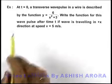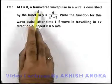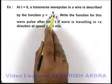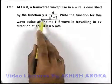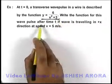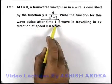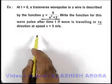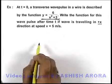In this example, we are given that at t equal to zero, a transverse wave pulse in a wire is described by the function y equal to 6 by x square plus 3. We are required to write the function for this wave pulse after time t. The wave is travelling in positive x direction and we are given that speed is 5 meters per second.